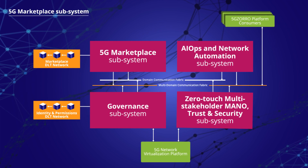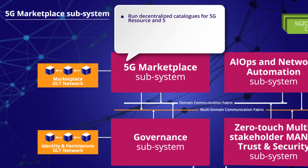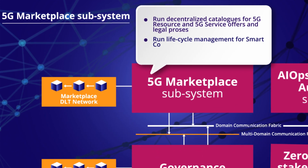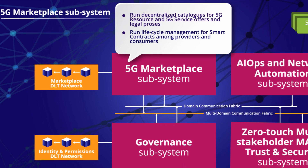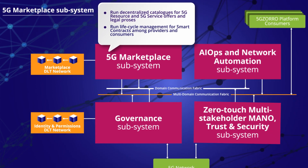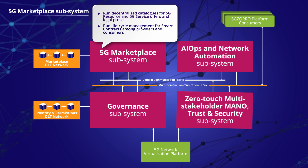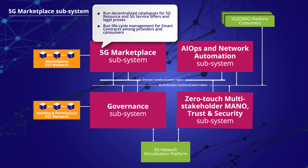The 5G marketplace subsystem is DLT-based. Discovery and classification processes are designed to be automated to minimize human intervention, making the published offers immutable and easy-to-be-discovered and classified. It enables a 5G product catalog and smart service and resource discovery, as well as smart contracts among providers and consumers.